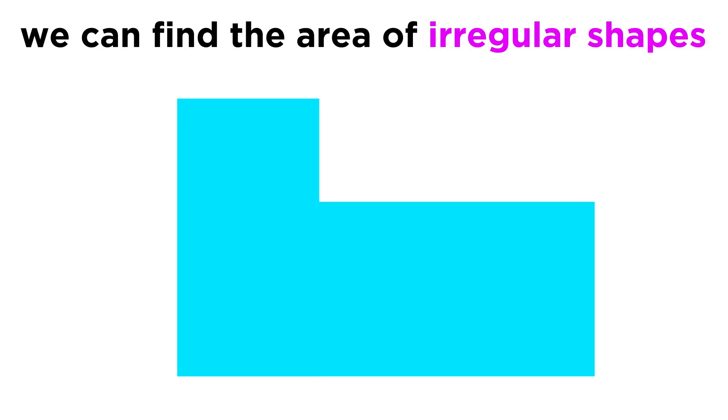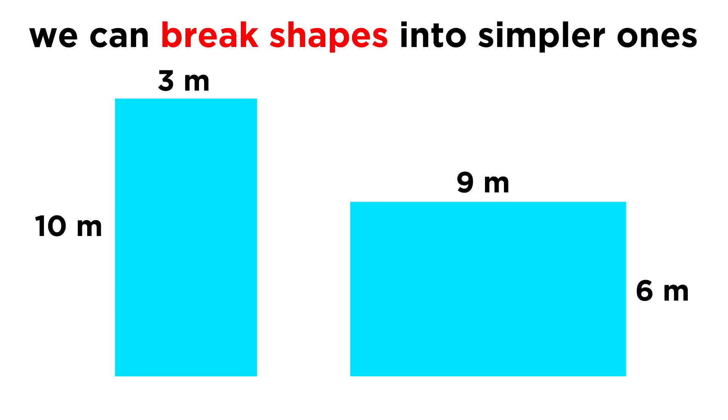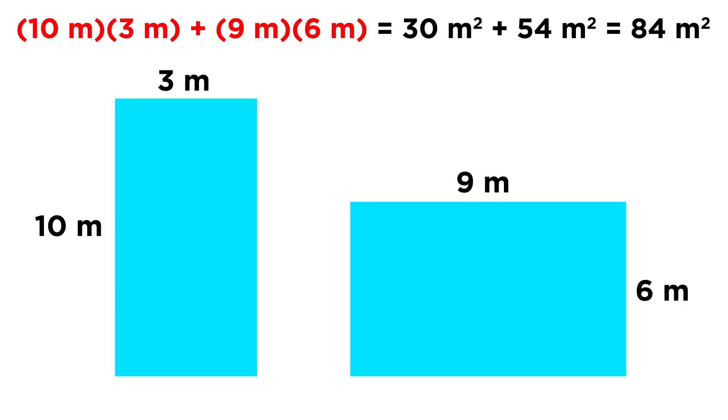Sometimes we will want to find the area of a shape that is quite irregular. To do this, we might break these figures up into simpler shapes that are more familiar. Take this shape. Given all of these side lengths, we can split this up into two rectangles. Then we just get the areas of the two rectangles and add them together.